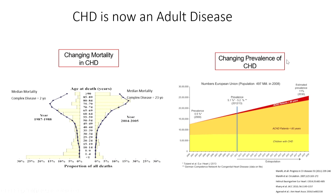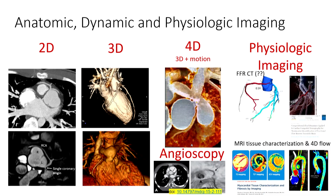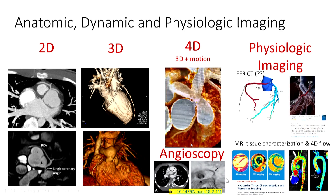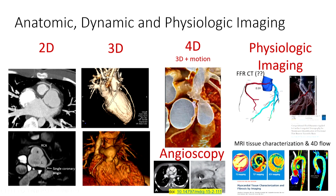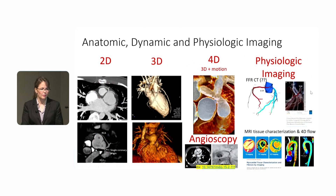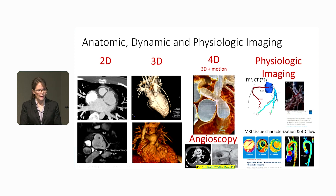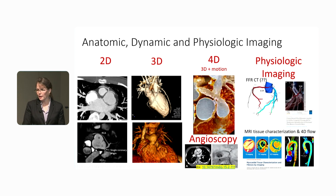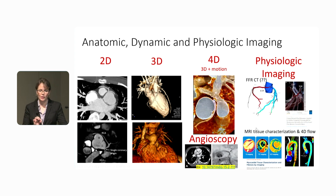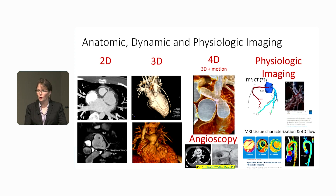We now have two-dimensional, three-dimensional, and four-dimensional information — hearts in motion. We're able to look inside vessels with what we call angioscopy, and we're now getting to the point of physiologic imaging. This is an example of FFRCT: a patient of mine who was 45 had an anomalous right coronary artery and had an abnormal FFRCT showing ischemia. We're also able to look at MRI tissue characterization and flow, giving us tools for both anatomy and physiology of congenital heart disease.